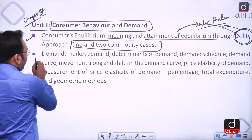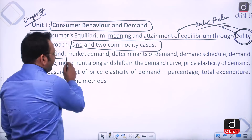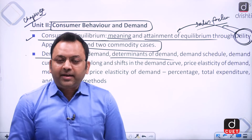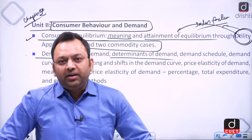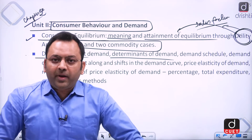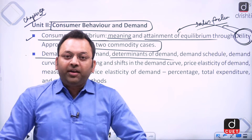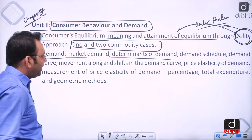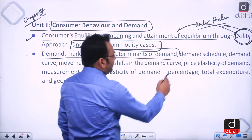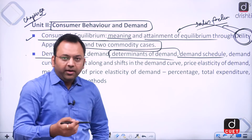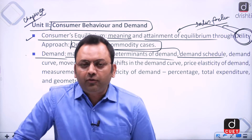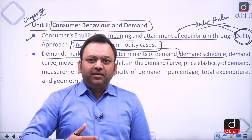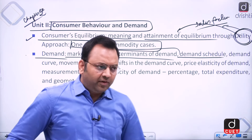We will discuss the concept of demand, market demand, and the determinants of demand. A consumer's willingness and capacity to buy a commodity constitutes demand. We will look at how demand changes with price — as price increases, demand typically falls — covering the demand schedule, demand curve, and shifts in the demand curve due to multiple factors.